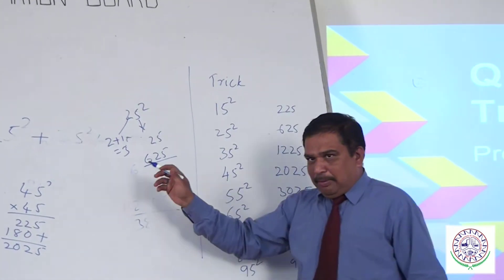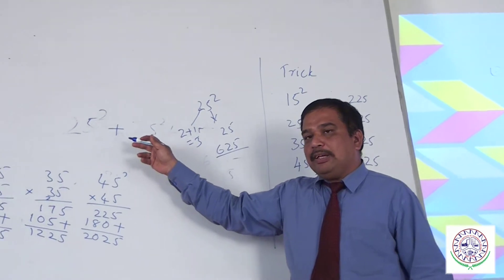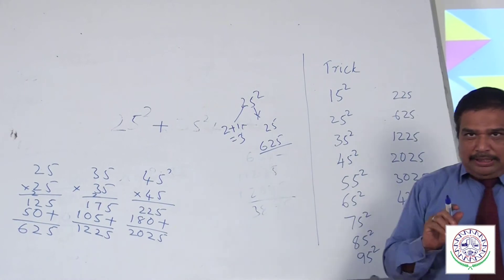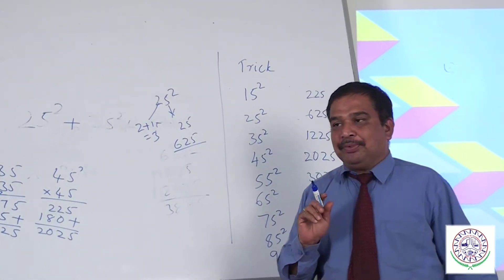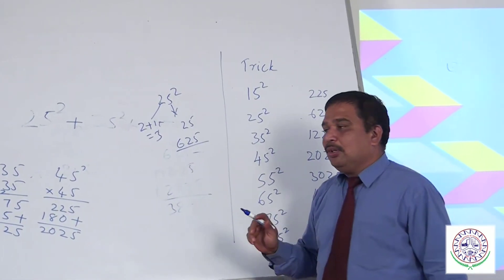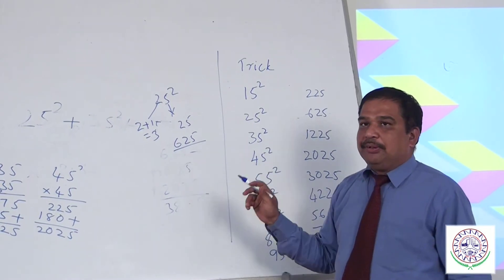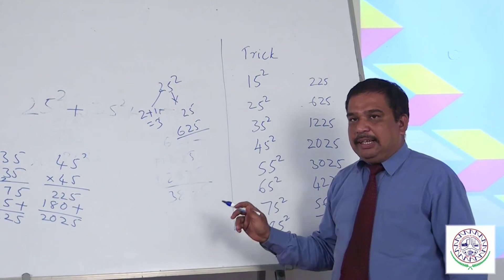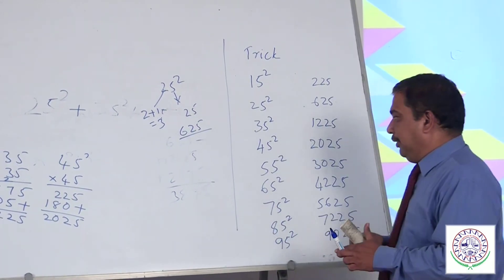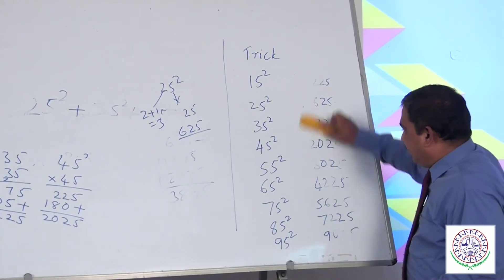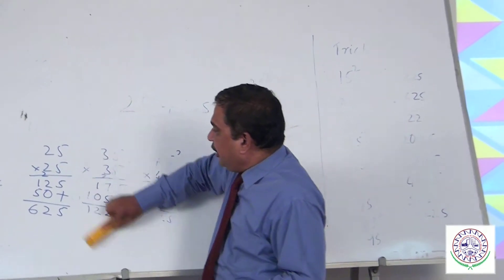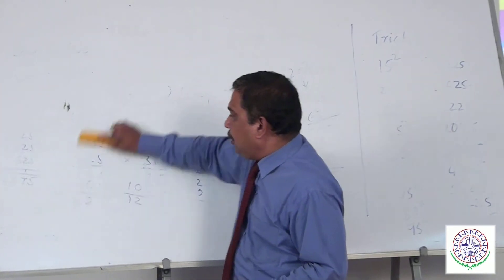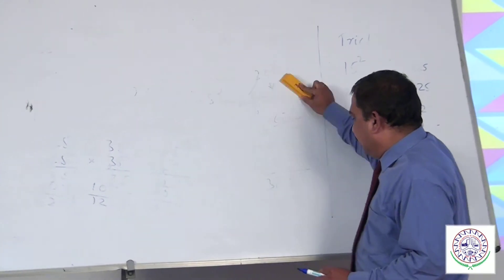You might have wondered how others solve problems very quickly — it's because they follow tricks like this one. You need to know the tricks of quantitative techniques to solve the paper quickly. Note that Trick 1 cannot be applied beyond 95; it works only from 15 to 95.